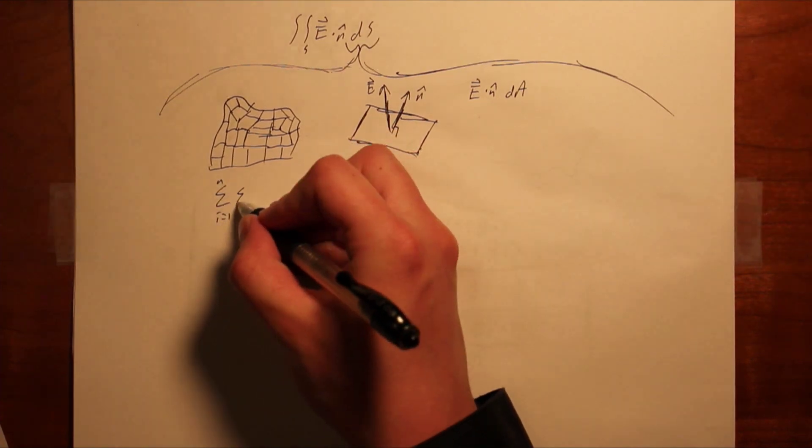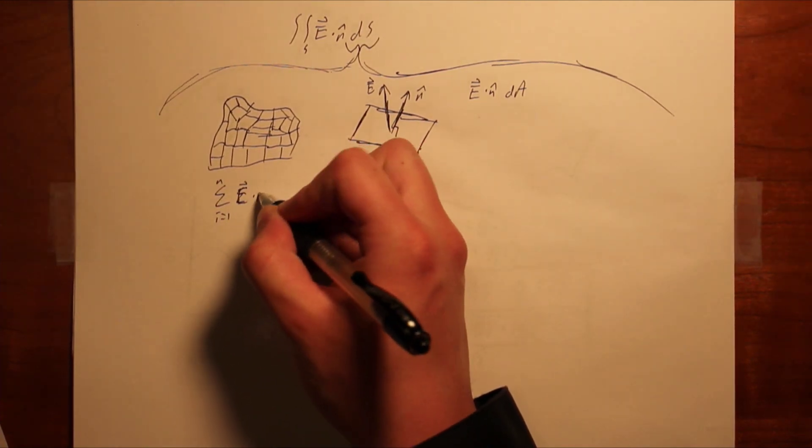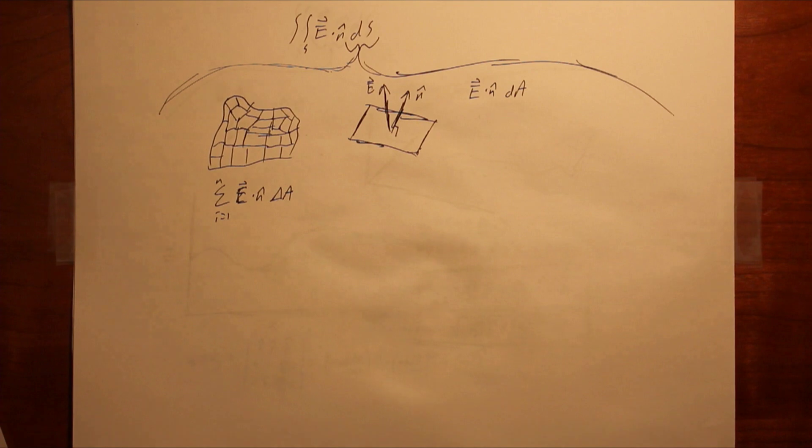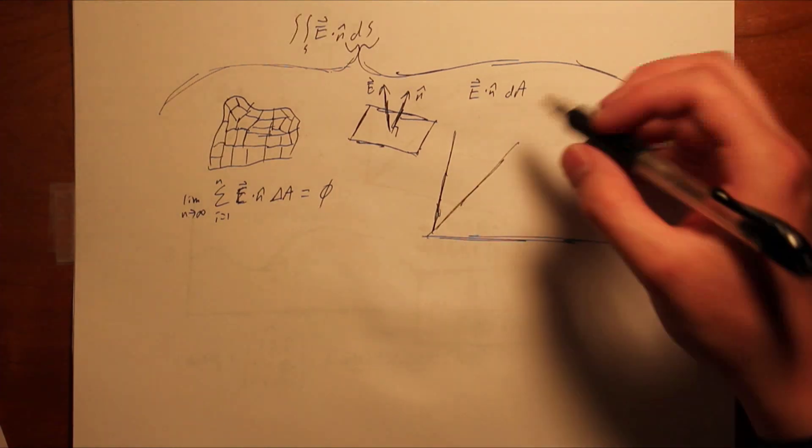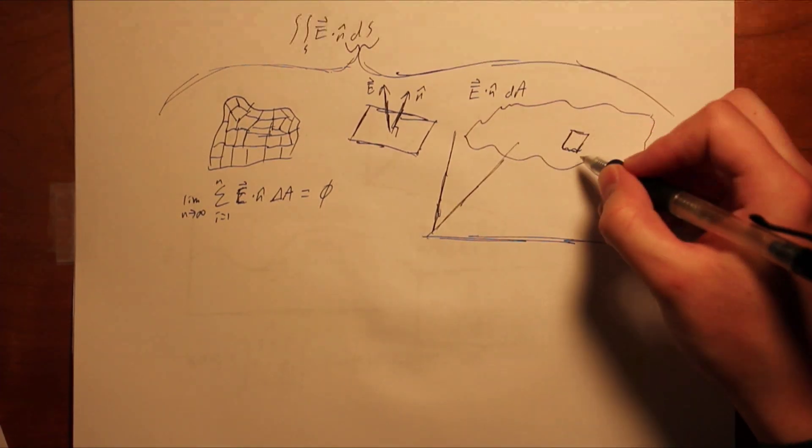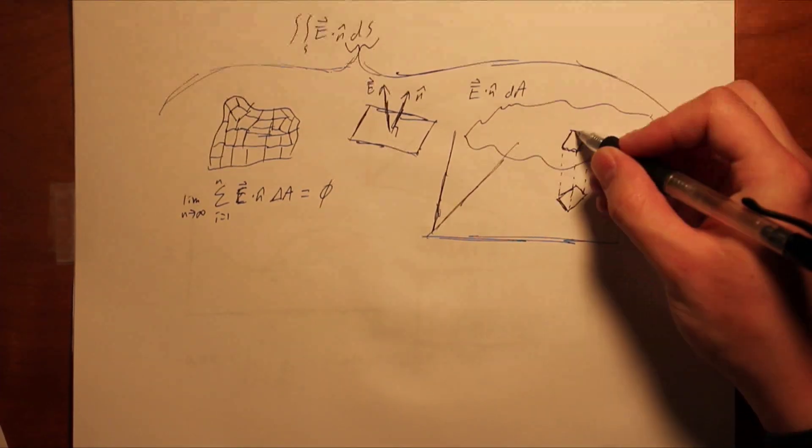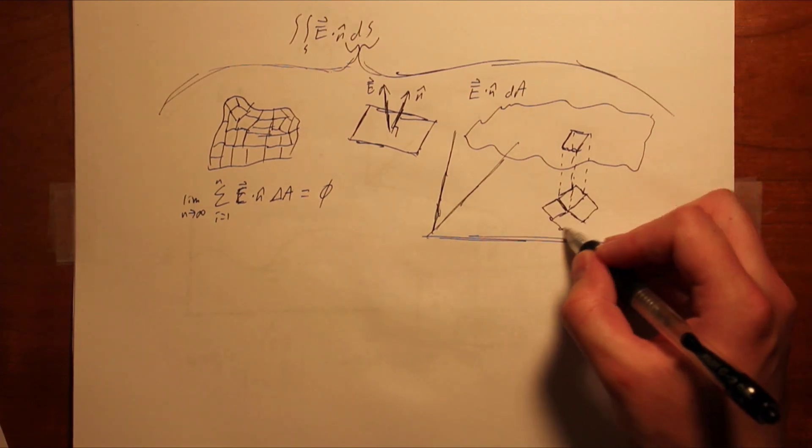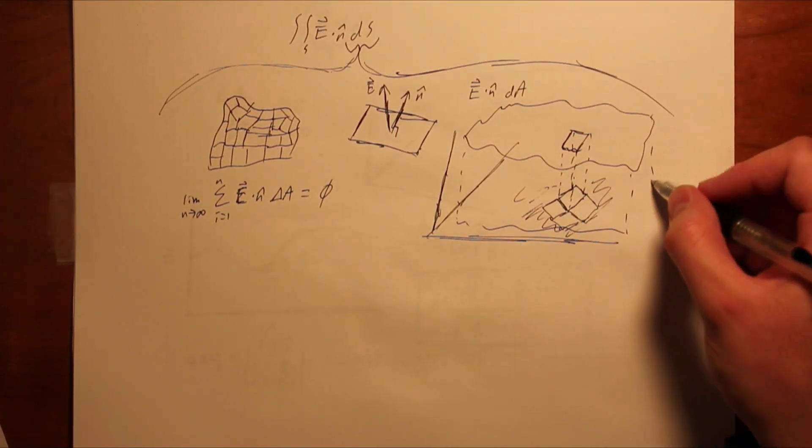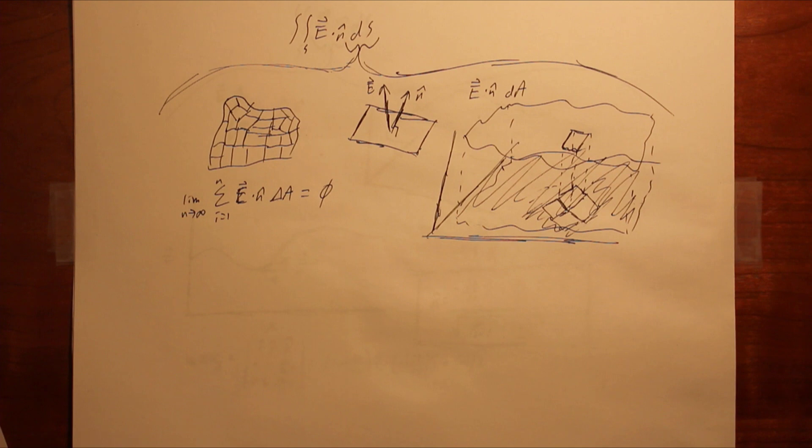As the number of approximating rectangles gets larger, the approximation gets better, and it makes sense that in the limit, the sum will equal the surface integral. We still don't have any way to systematically deal with those tiny rectangles of surface, but what if we instead consider the projection of the surface onto a two-dimensional plane? A relationship between rectangles of surface and rectangles of 2D projection will allow us to calculate the surface integral as a standard double integral over a 2D region.